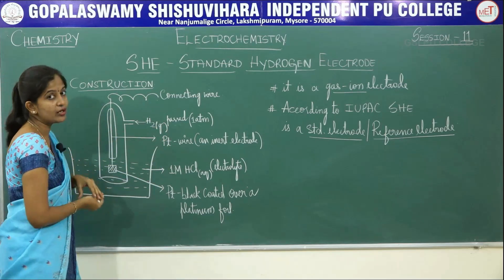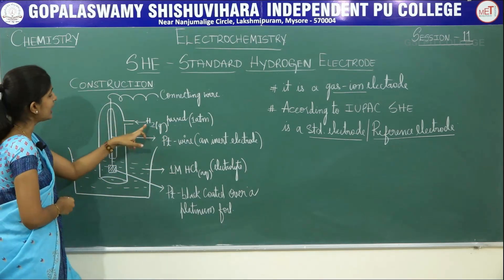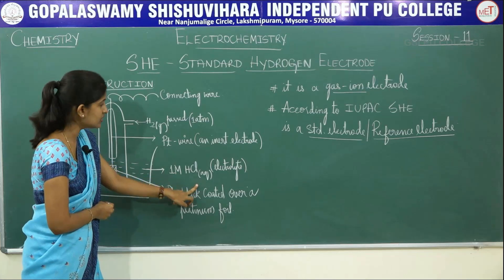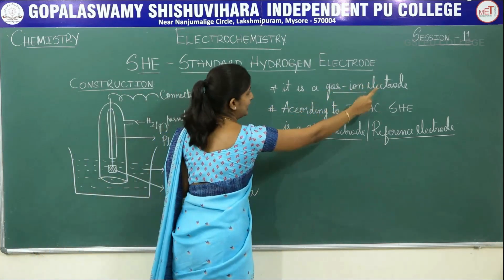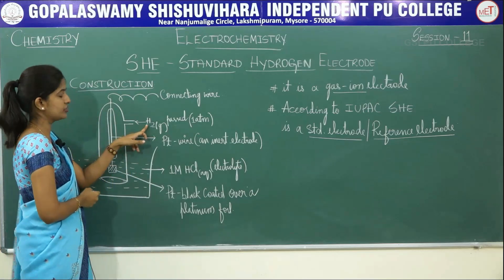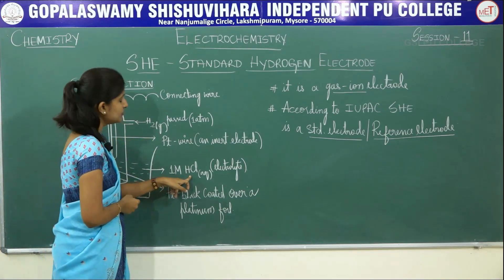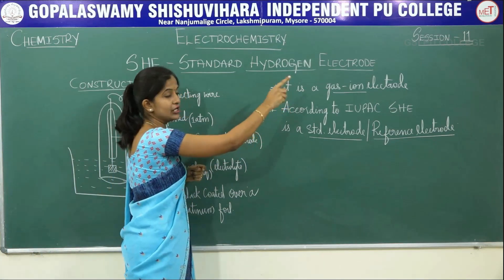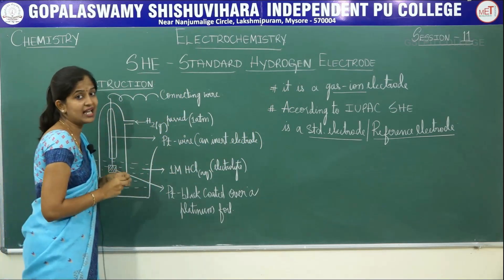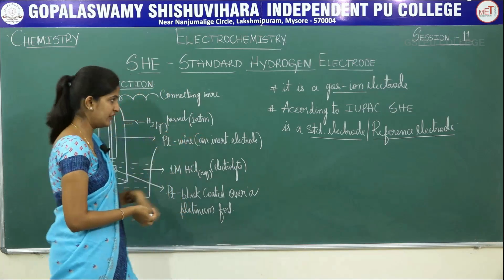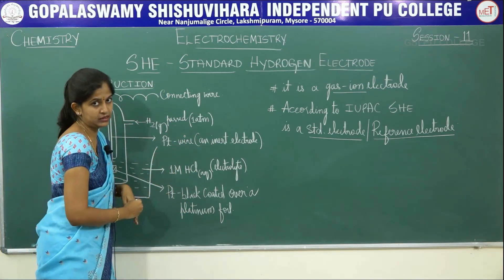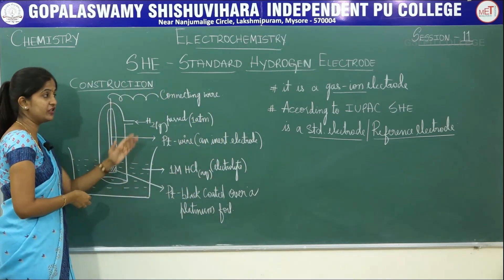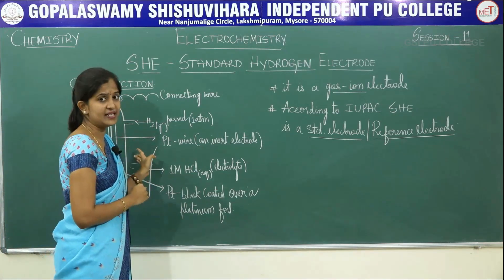So this is the construction of SHE. You can observe that hydrogen gas is present as well as HCl, present in the form of H⁺ and Cl⁻ ions. Hence it is called a gas ion electrode — hydrogen gas is passed through the electrode and you have H⁺ ion concentration in your electrolyte. Unlike a metal rod dipped in a metal solution, platinum is dipped in HCl, so hence it is a special type of electrode called a gas ion electrode. Since the electrode potential is with reference to SHE, it is called a reference electrode.